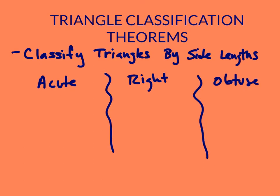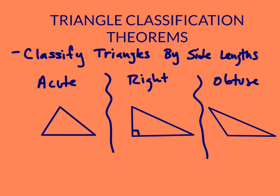These triangles are classified by their angle measures. An acute triangle has all acute angles. In a right triangle, one of those angles is a right angle. And in an obtuse triangle, one angle is obtuse. I've gone ahead and drawn an acute triangle, a right triangle, and an obtuse triangle.